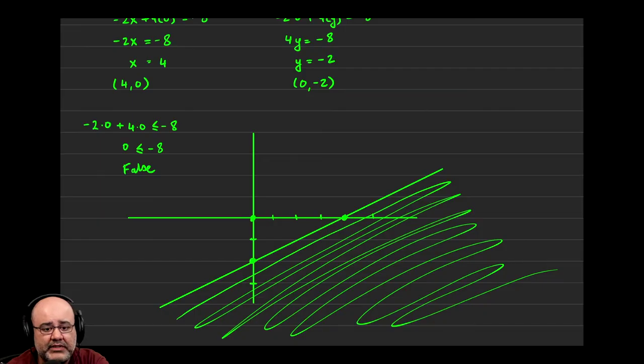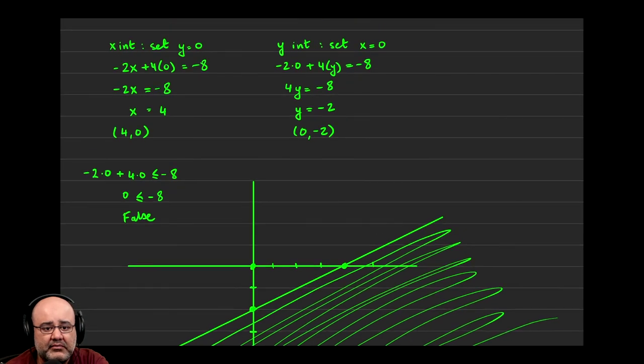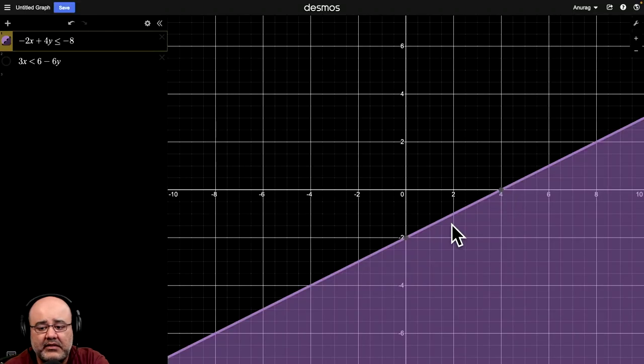So those are the exact two points we had right here as the x-intercept and the y-intercept. So our calculations are correct, and we also have a solid line because it's less than or equal to.